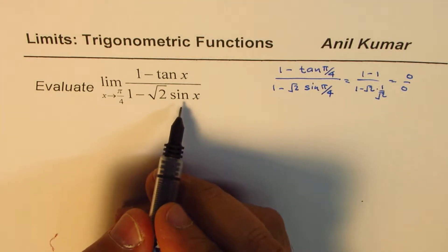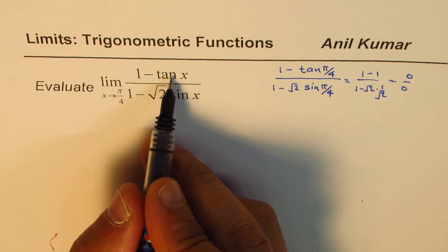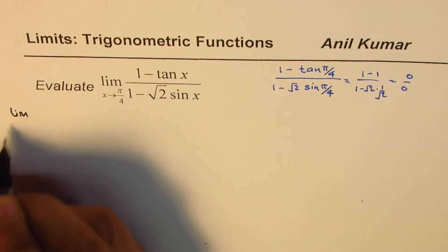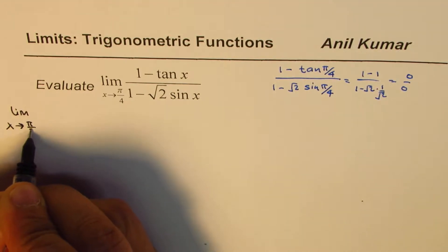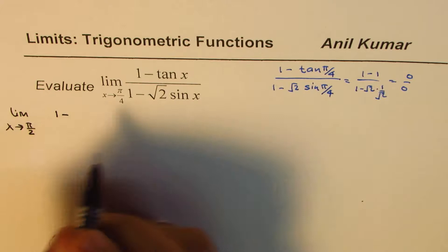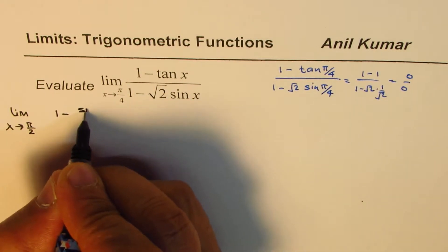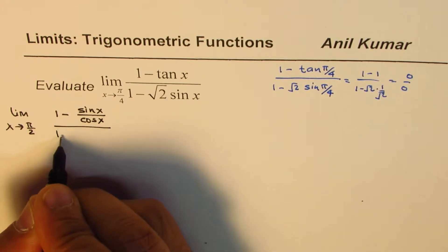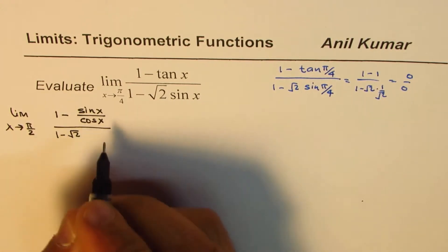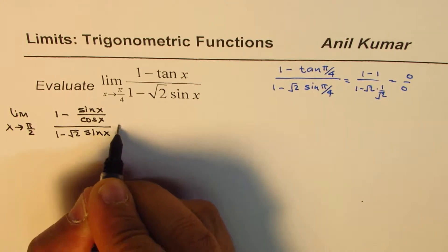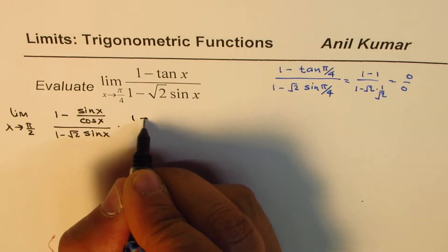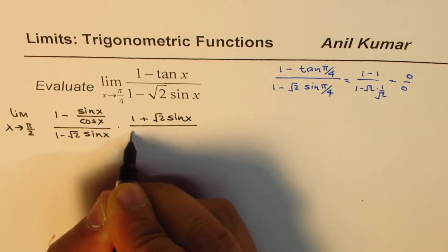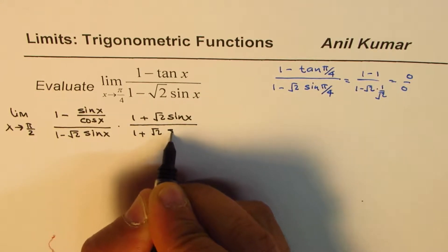Once we rationalize, we get terms of sine and cosine. We could also write tan as sine over cosine. So we'll write this as the limit x approaches π/4, replacing tan x with sin x over cos x, and the denominator remains 1 minus √2 sin x. We'll multiply and divide by the conjugate (1 + √2 sin x) to rationalize.